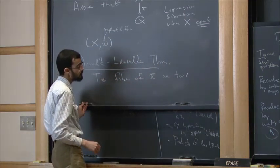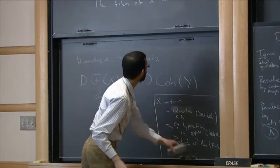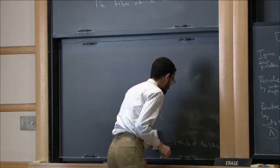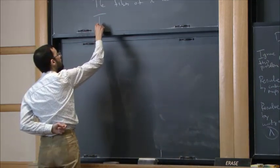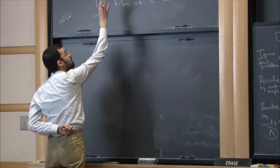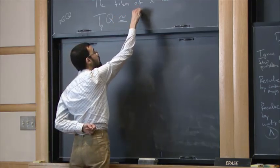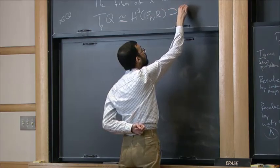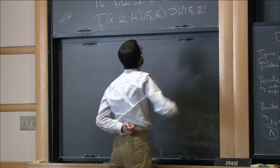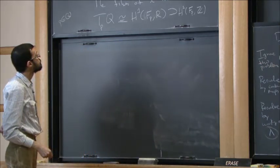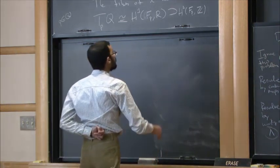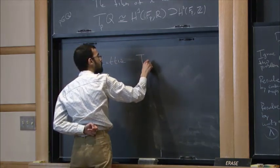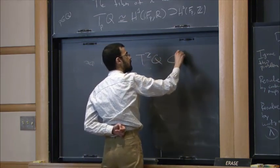There is a result of the Arnold-Liouville theorem that essentially says the fibers of π are tori. More precisely, it gives you a canonical identification between the tangent space of the base — so if p is a point in the base, it gives a canonical identification between T_p Q and H^1(F_p; ℝ). And of course this contains H^1(F_p; ℤ) inside it.